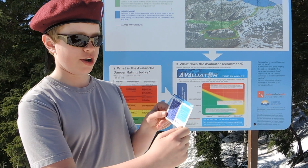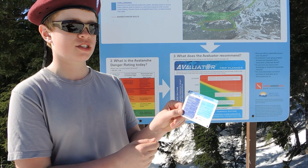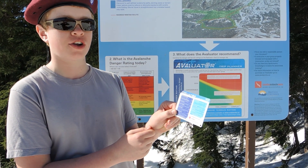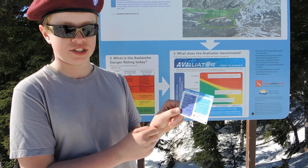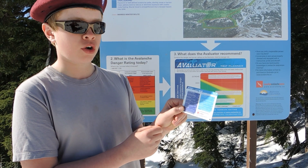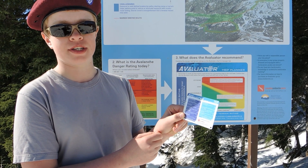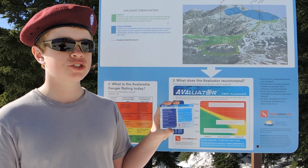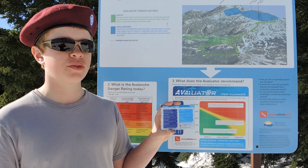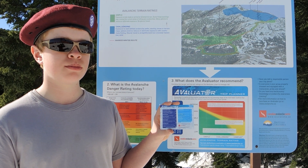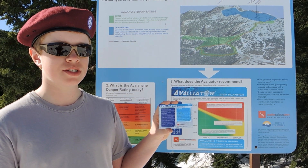On the back of the card, you'll find six questions regarding the current avalanche conditions and four questions regarding the terrain characteristics. Each question is scored with zero, plus one, or plus two.